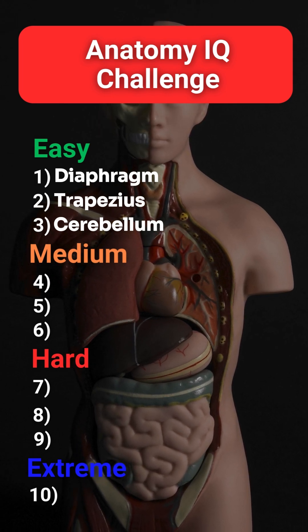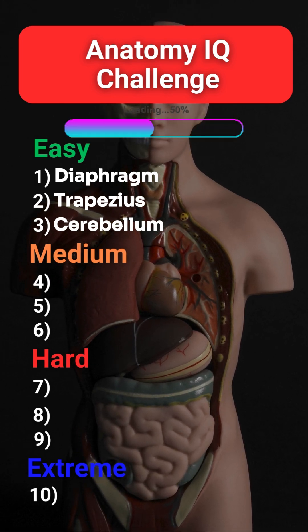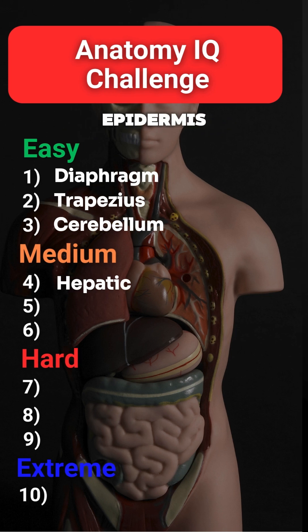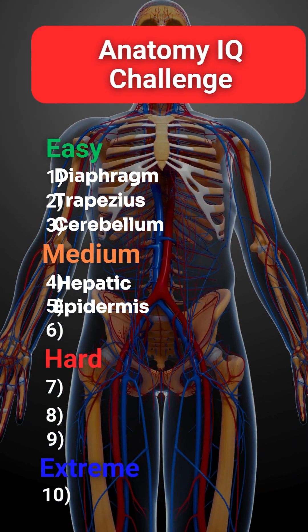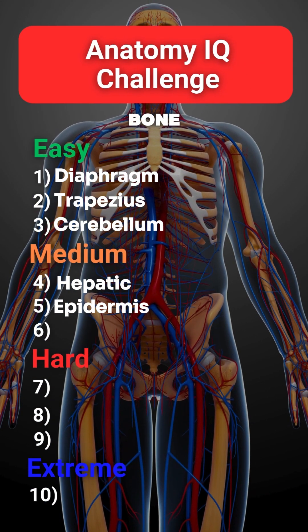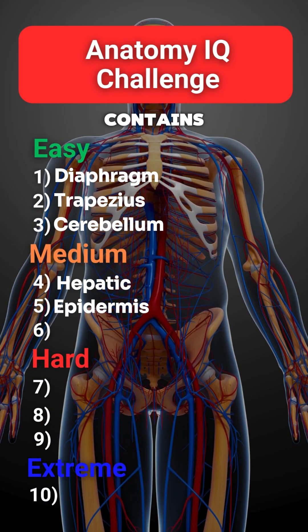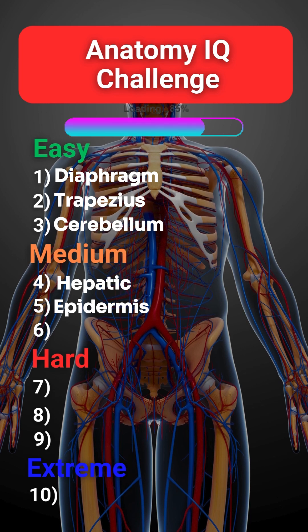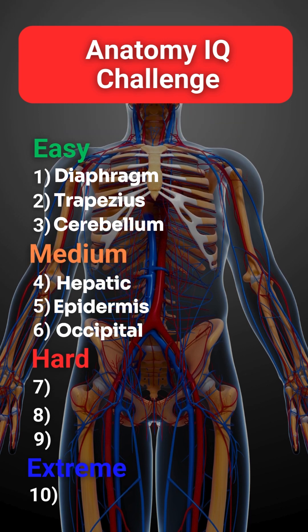Four: the artery that supplies blood to the liver — hepatic. Five: the outermost layer of the skin — epidermis. Six: this bone forms the base of the skull and contains the foramen magnum — occipital.